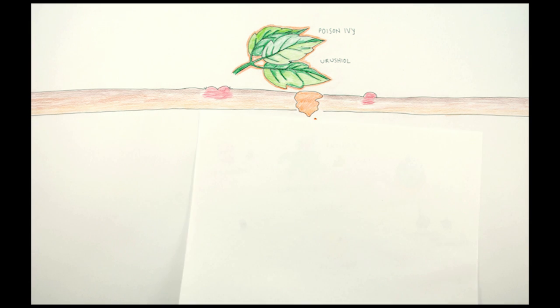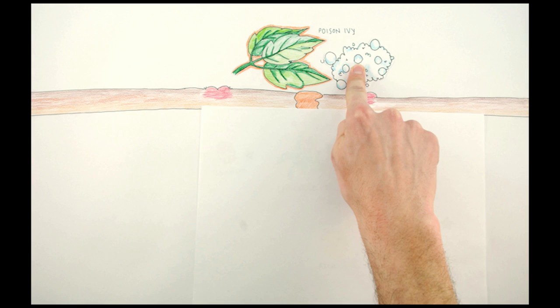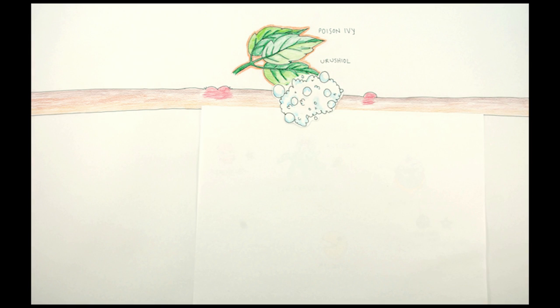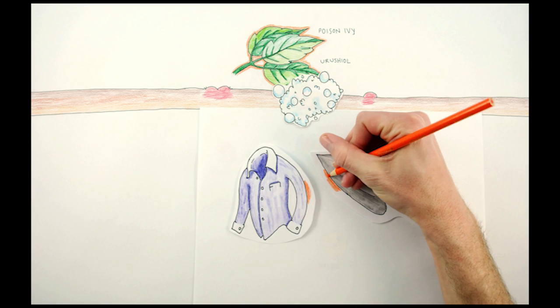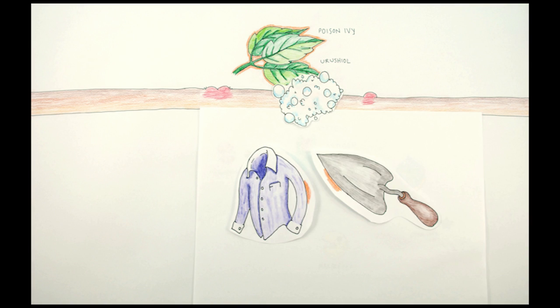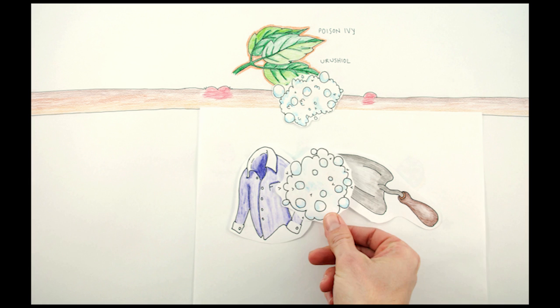If exposed, you can minimize your allergic reaction by scrubbing your skin with soap and water as soon as possible. Because it's an oil, urushiol can get on your clothes, tools, or pets, and can touch your skin later with the same nasty effect, so carefully wash those too.